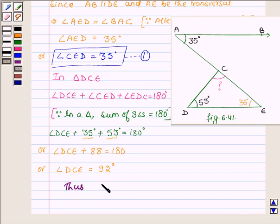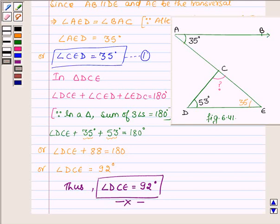Thus, our answer is angle DCE is equal to 92 degrees, which completes the solution. Hope you enjoyed it. Take care and bye for now.